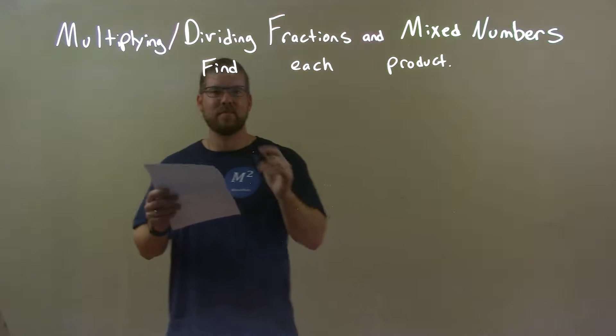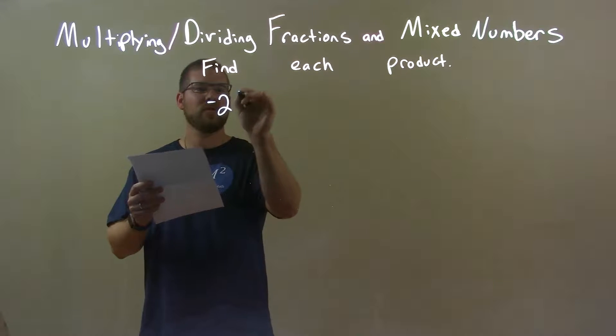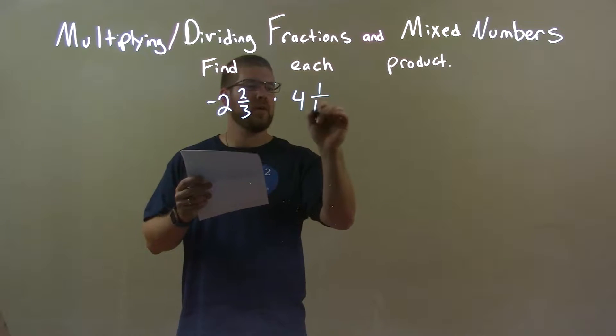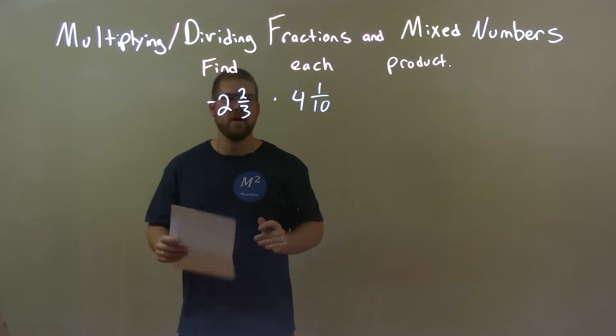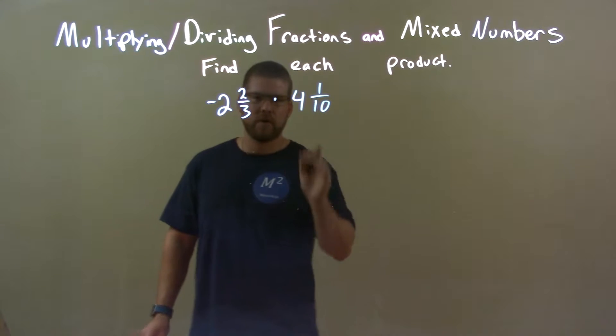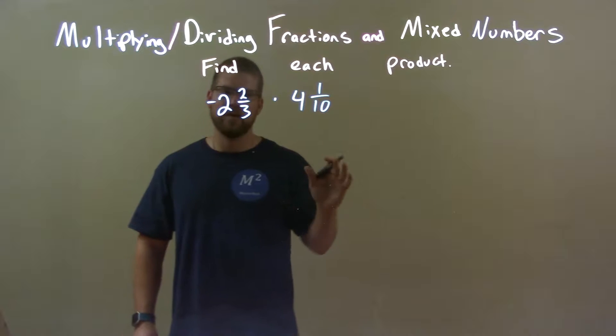So if I was given these numbers: negative 2 and 2 thirds times 4 and 1 over 10. Well, first thing is I like to write these as improper fractions for multiplication. I always convert it.